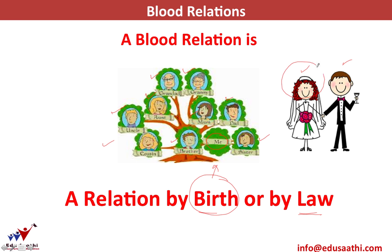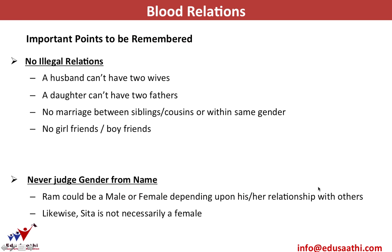What are relationships by law? When I grow up and marry, my wife comes from another family. After marriage I basically have two family trees. My wife will have a sister, a brother, a dad, a mom, and because I've married her, all these relations are also my relations — these are called relations by law. A blood relation covers both: relation by birth as well as by law.